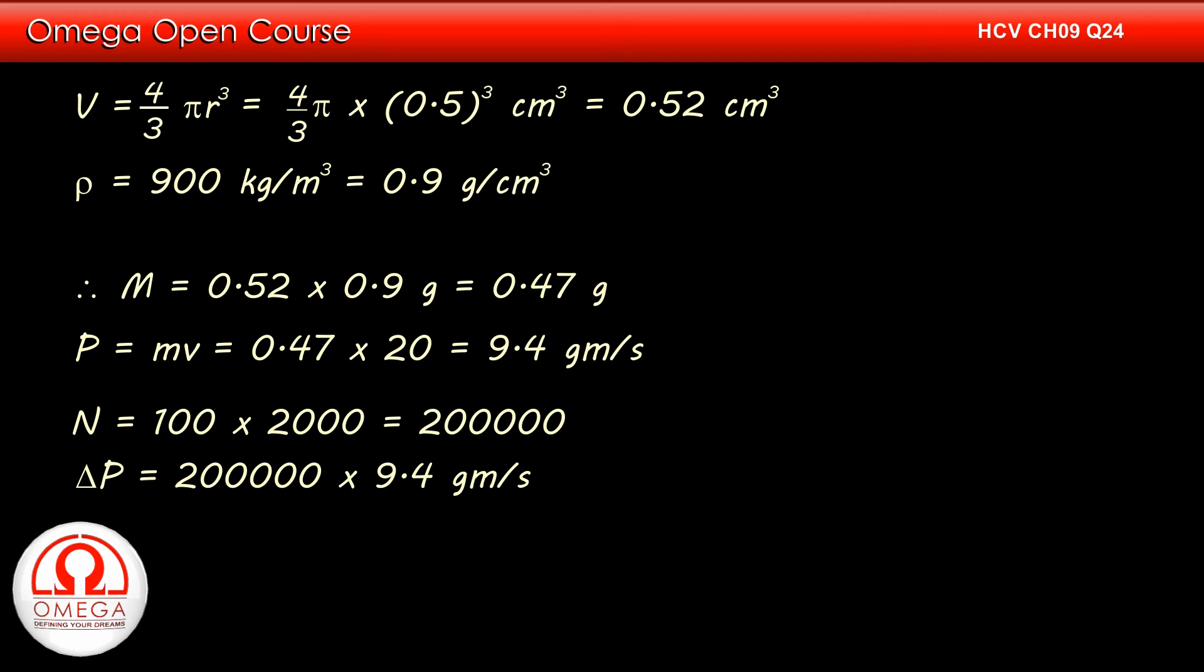The change in momentum of hailstones striking the roof is 200,000 × 9.4 g·m/s or 1880 kg·m/s. Please note that we have divided the value by 1000 to convert g·m/s to kg·m/s.